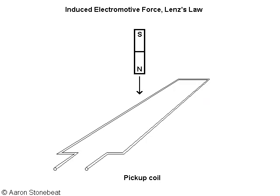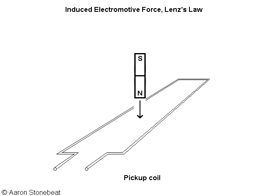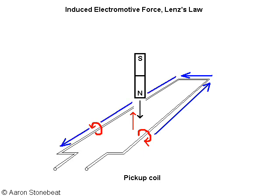Imagine a magnetic field approaching the coil. The coil will react by generating a magnetic field in the opposite direction. Using the right-hand rule or the corkscrew rule we know that a counterclockwise electric field is needed for this to happen.